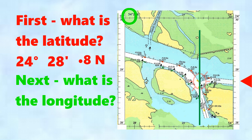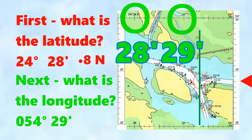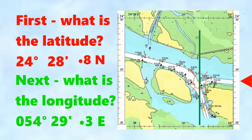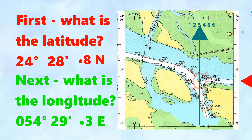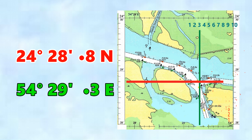Now we're going to look at the longitude. From the top left it's 54 degrees. Here's 28 minutes, 29 minutes and 30 minutes, so we're at 29 minutes. Adding the decimals from the top right, we can see we're going to be 0.3. So the latitude and longitude of that buoy is 24 degrees 28.8 minutes north and 54 degrees 29 minutes 0.3 east.